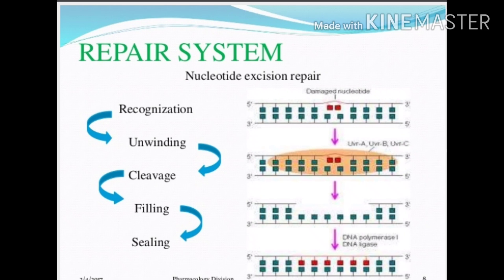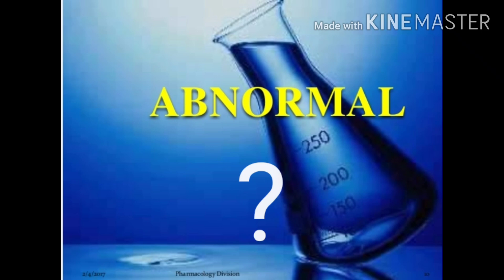From the diagram, the repair system works as follows: the thymine dimer region is first recognized, then unwinding of DNA takes place, then cleavage of the thymine dimer portion along with a small amount of the normal portion, and finally filling the removed area with new correct sequences — known as sealing. Since we are excising the damaged nucleotide, this is called nucleotide excision repair mechanism.